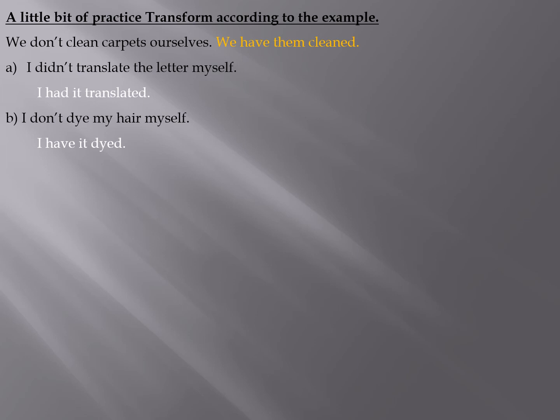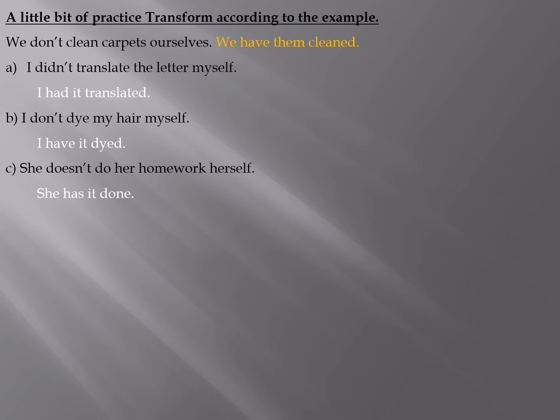Look here — I'm using the verb 'to have' according to the tense of my sentence. The first one is past, so I used 'had.' The second one is present, so I used 'have.' She doesn't do her homework herself — what is the tense here? Yes, it's present simple, so the verb 'to have' is going to be used in the present simple too: she has it done.